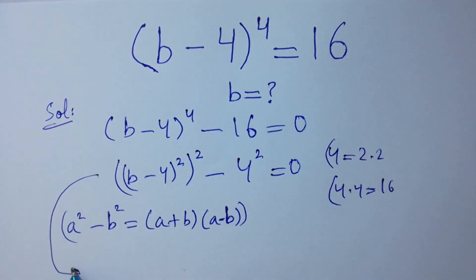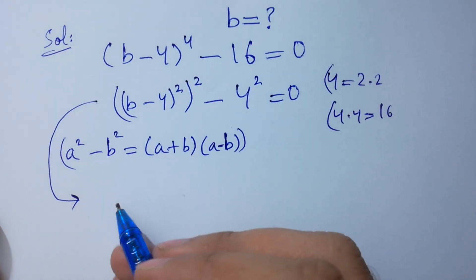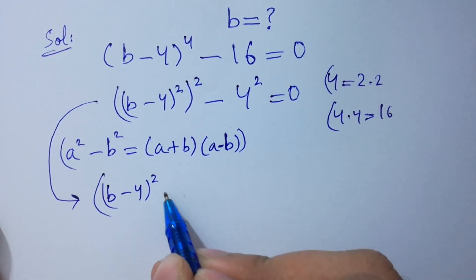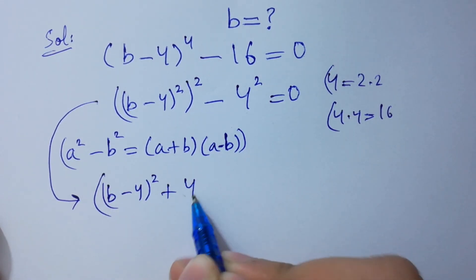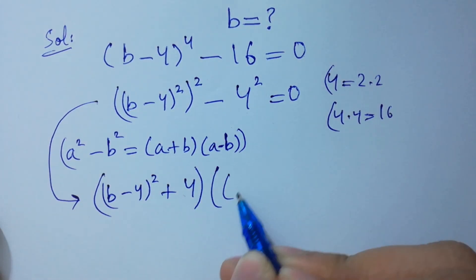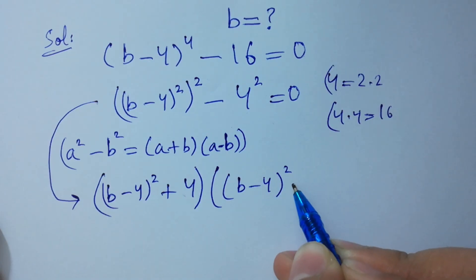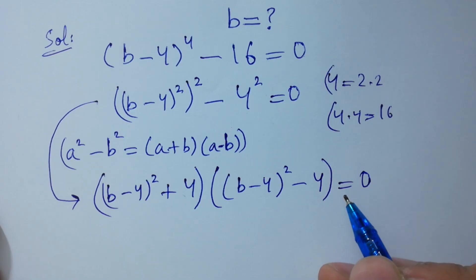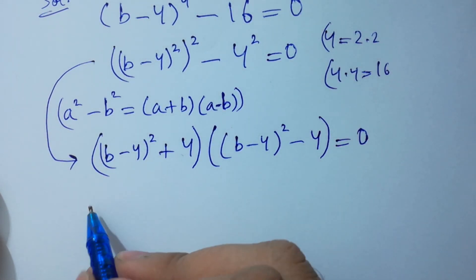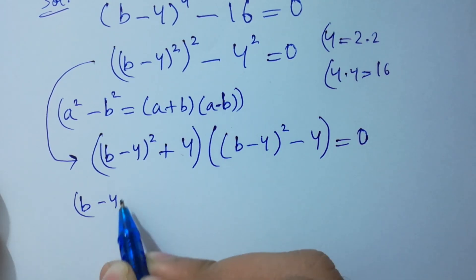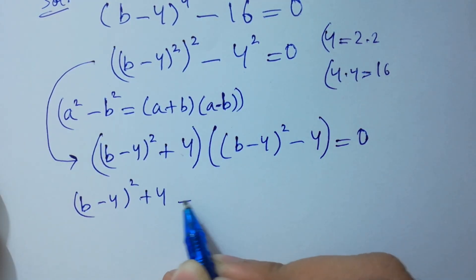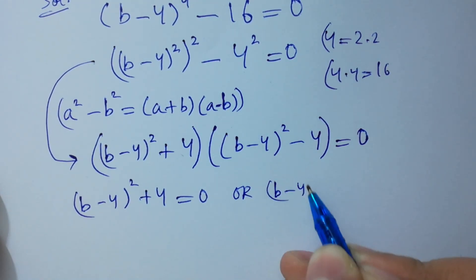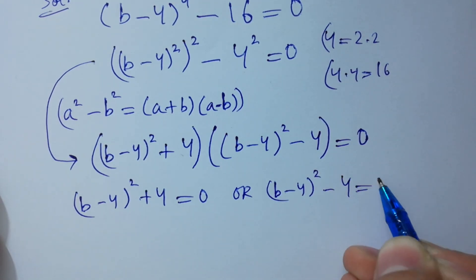So we can apply it here: [(b-4)² + 4][(b-4)² - 4] = 0. This means either (b-4)² + 4 = 0 or (b-4)² - 4 = 0.